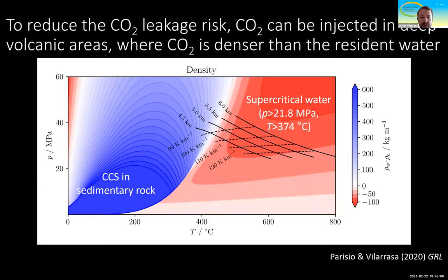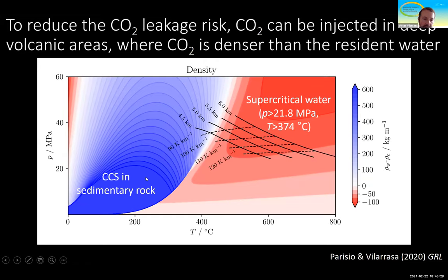In the last part of my presentation, I want to introduce a new storage concept: deep volcanic areas. We are proposing this because it reduces the risk of CO2 leakage. In this plot, you can see the density difference between water density and CO2 density. In CO2 storage in sedimentary rocks, we are in the zone around 10 to 20 MPa, above 30°C.